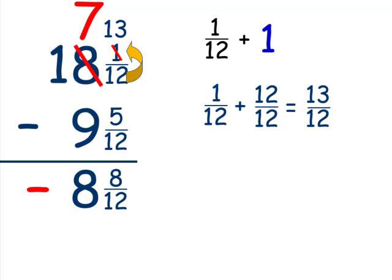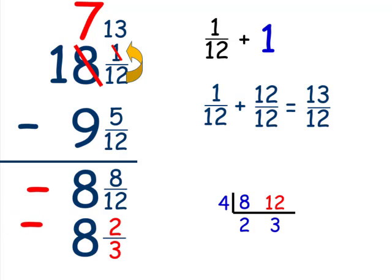We are not done since 8 twelfths can be reduced. The greatest common factor between 8 and 12 is 4. 8 divided by 4 is 2. 12 divided by 4 is 3. So our answer is negative 8 and 2 thirds.